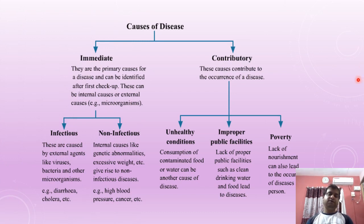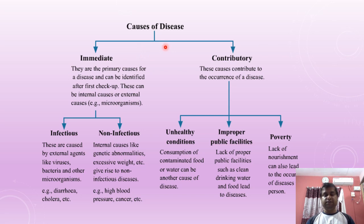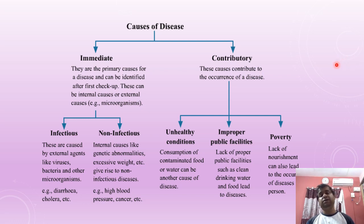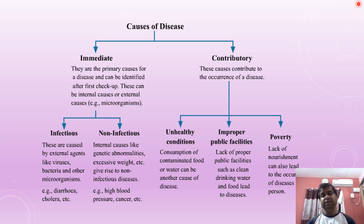A chart gives a breakdown of the causes of disease. The first half is broken into immediate causes and contributory causes. Immediate causes are the primary causes of disease and can be identified after a first checkup — these can be internal or external. For example, the coronavirus is an immediate cause because it is an external microorganism entering our body and causing infection quickly.